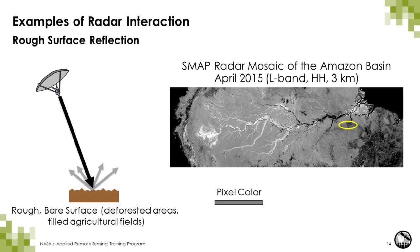This next example shows rough bare surface — such as an area that has been deforested, tilled agricultural fields, or water roughened up by wind. With some level of roughness, the signal is scattered diffusely and part of it returns to the radar. For areas like these, the backscatter intensity is low, but not as low as a specular reflector.